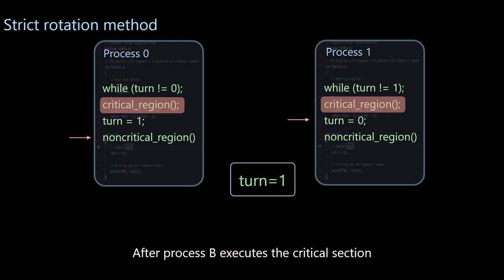After process 1 executes the critical section, it also takes the initiative to change the lock to 0 of the other party. In this way, a state of competition is avoided. The process has become humble.